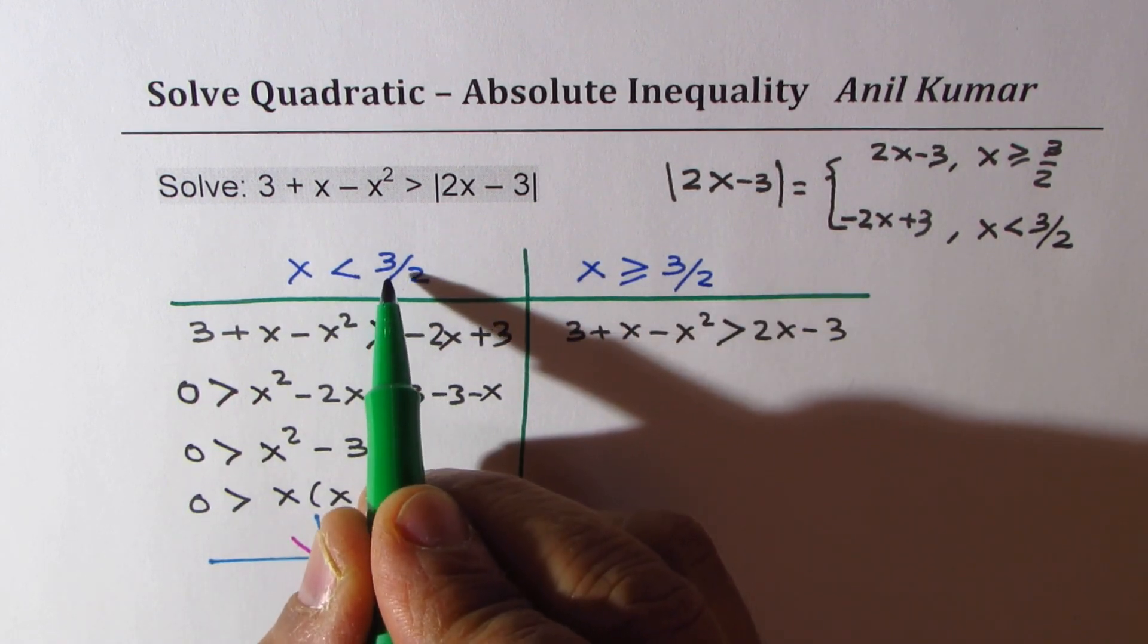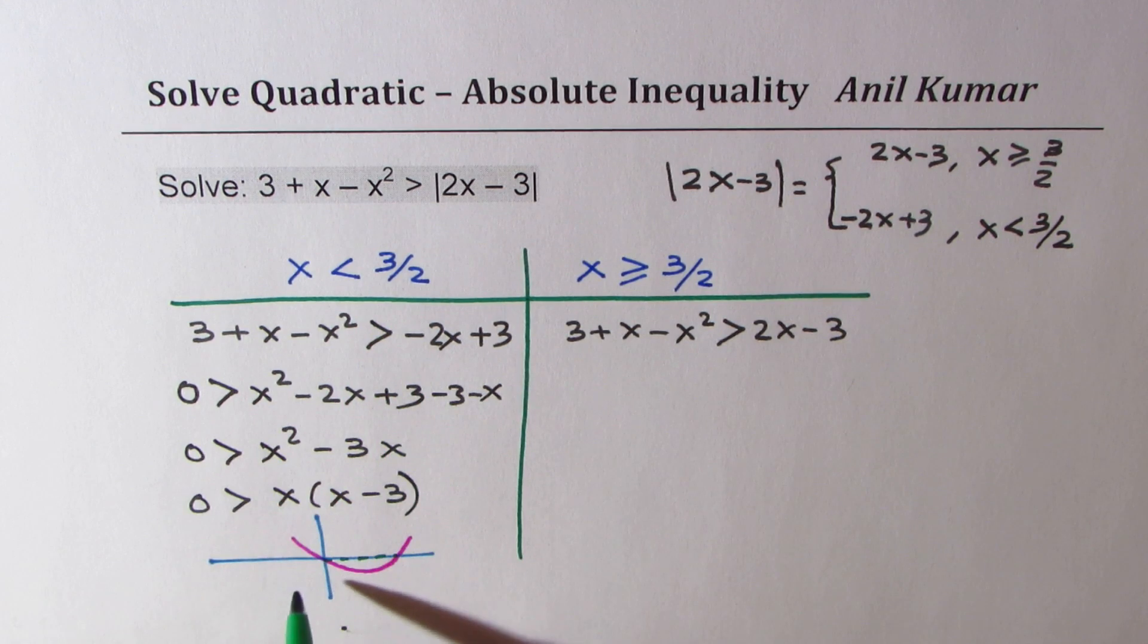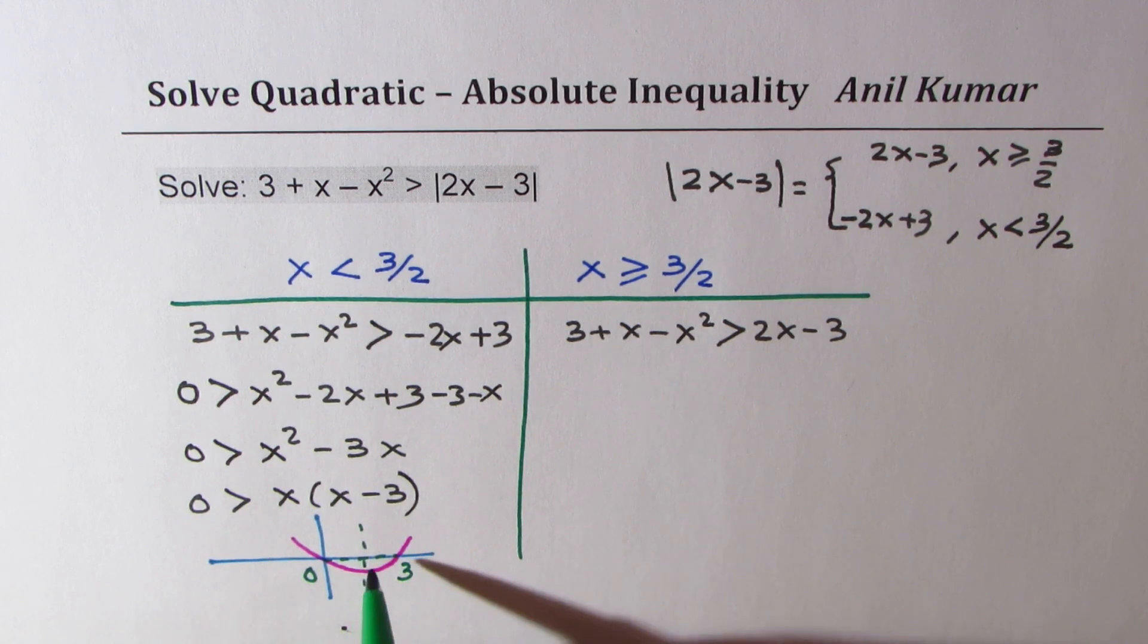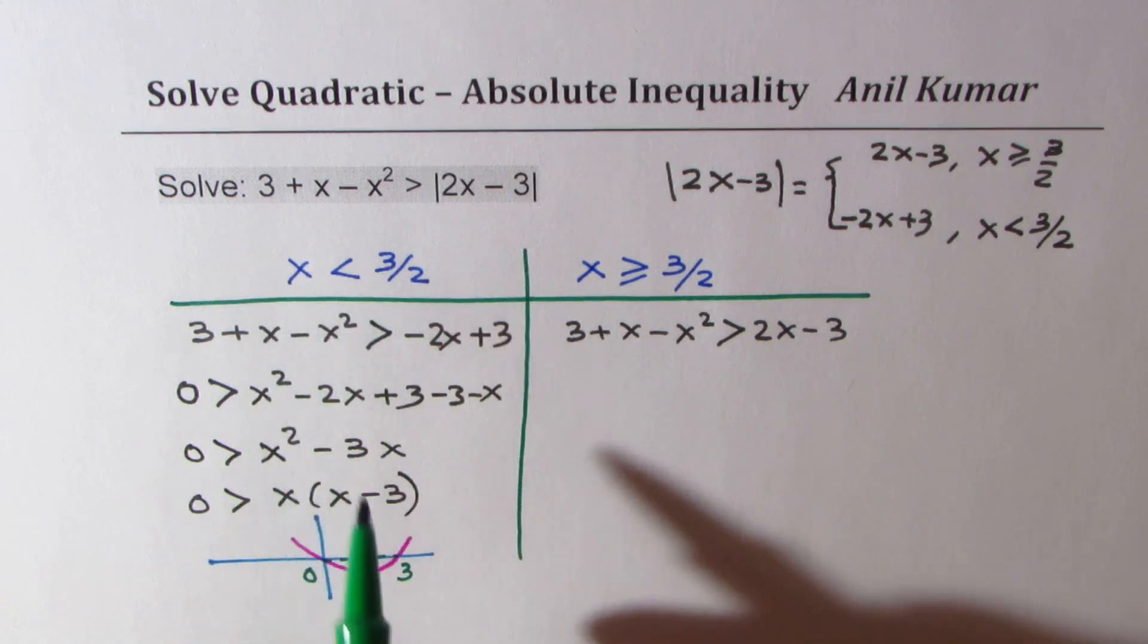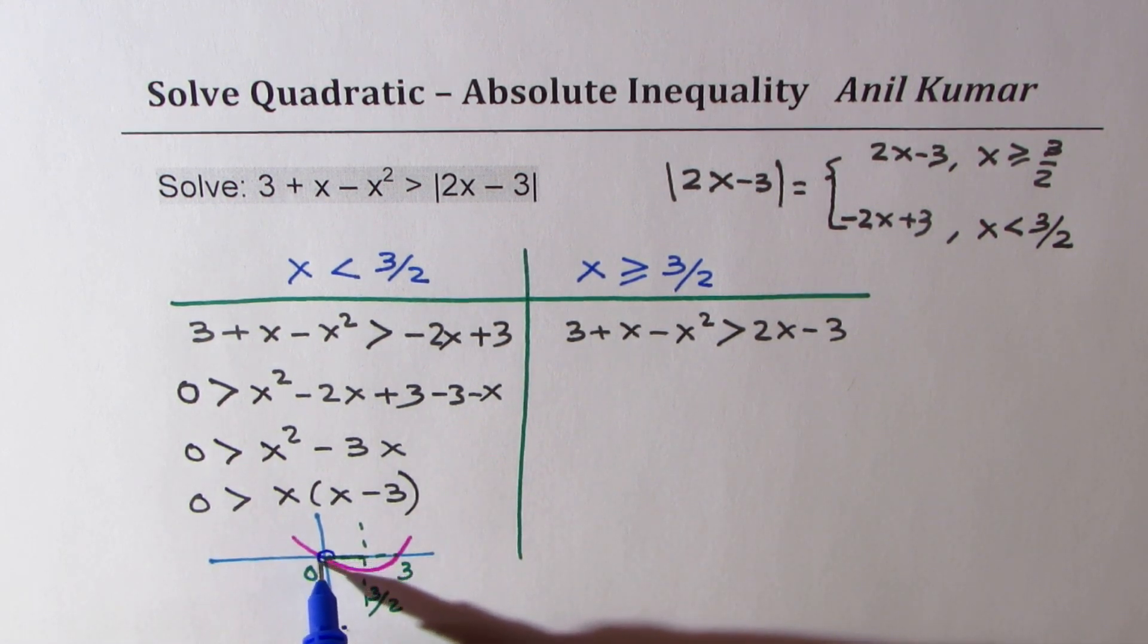However, we are analyzing only on the left side of 3 by 2, right? So this is 0, this is 3, that is 1.5, correct? So, in this interval, the solution which we get is from 0 to 3 by 2. 0 to 3 by 2, but not including these. So we get this interval from 0 to 3 by 2.